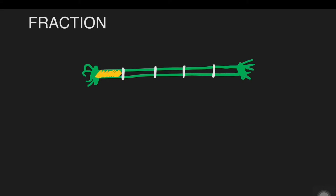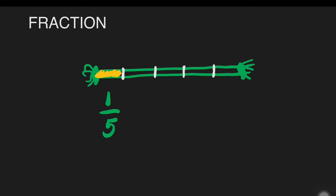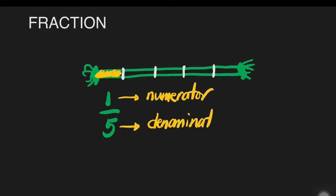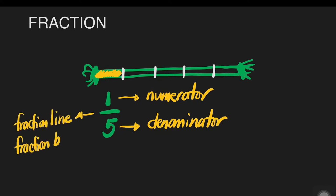We will use one part of this rope, and this part represents — we can write it in fraction as one over five, or one-fifth. Our one is called the numerator and five is our denominator. The dividing line is called the fraction line or bar.